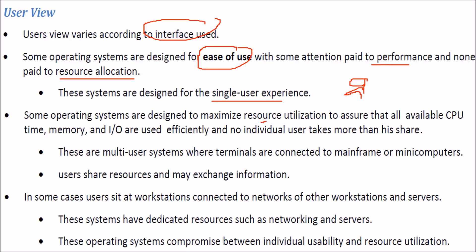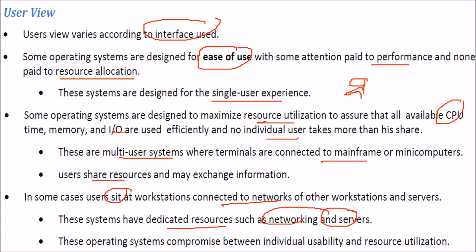Some operating systems are designed to maximize resource utilization, ensuring that CPU time, memory, and I/O are used efficiently, and that no individual user can take more than their allocated share. These are multi-user systems where terminals connect to mainframes and mini computers, users share information and data, and workstations may be connected to networks or servers with dedicated resources. Such OS balances individual usability with resource utilization.